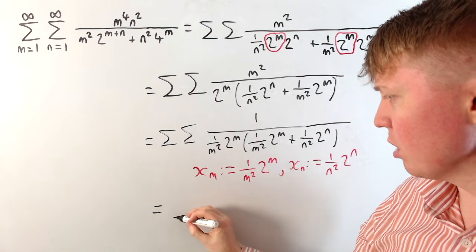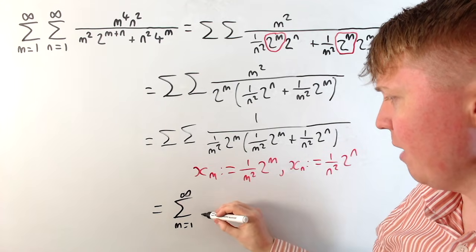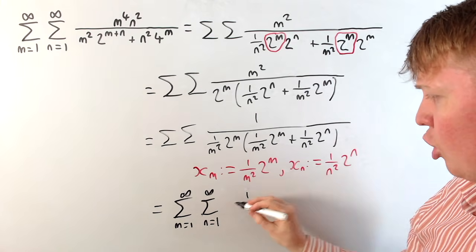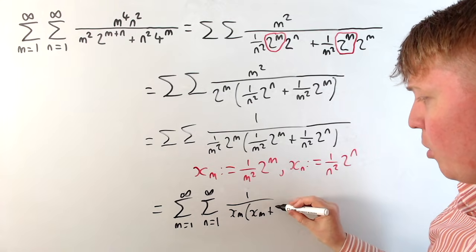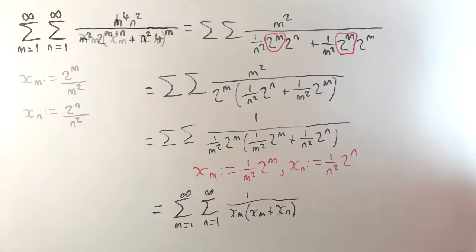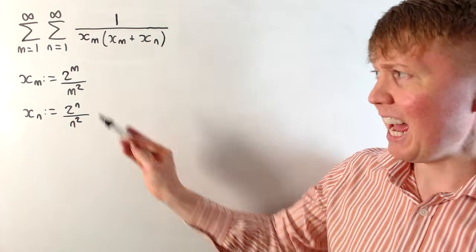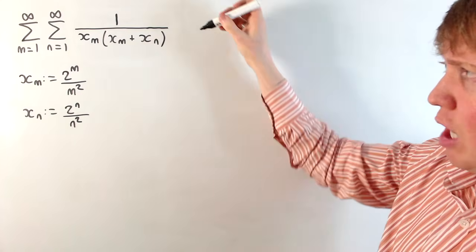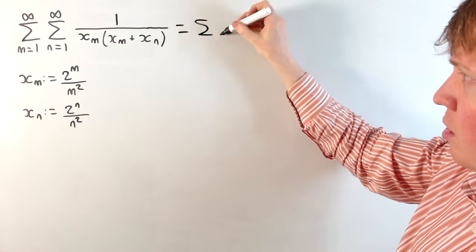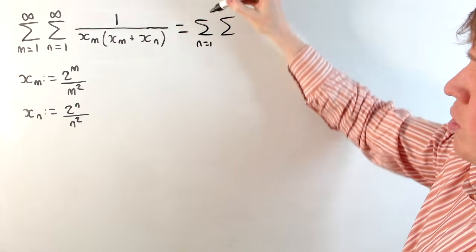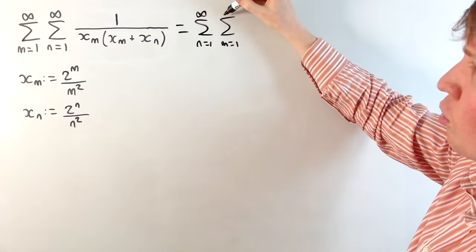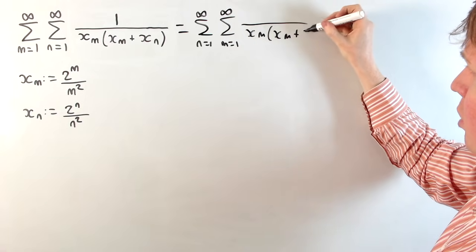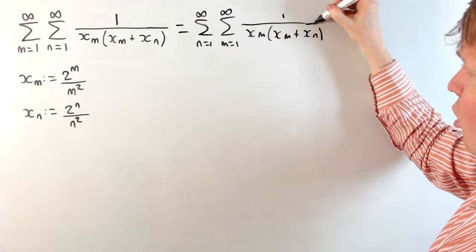This gives us something a little bit nicer to work with. We can rewrite this quite daunting-looking double sum — the sum from m and n equals 1 up to infinity — and express all of this as 1 over xm times xm plus xn. Now we'll see if we can exploit some of the symmetry, since the xm and xn terms are effectively the same as each other. The first thing we can try is swapping the order of summation, which technically we ought to check does indeed converge — we'll assume for the sake of solving this problem that it is valid to do so.